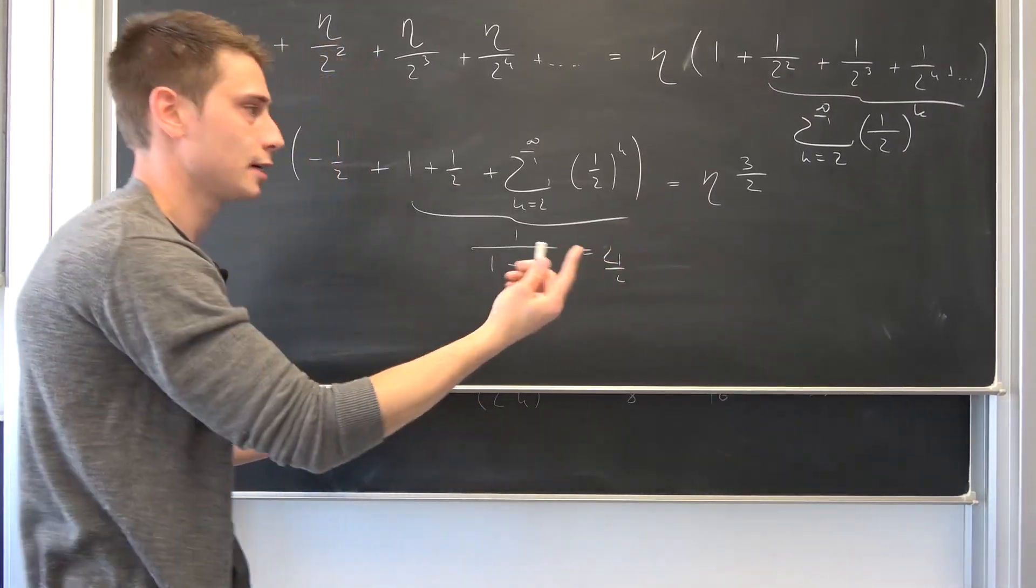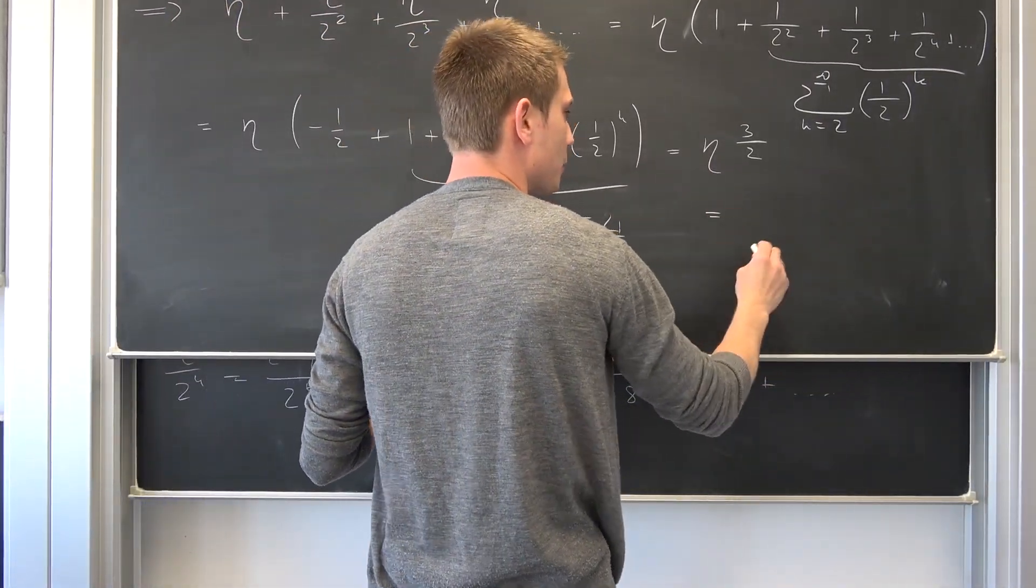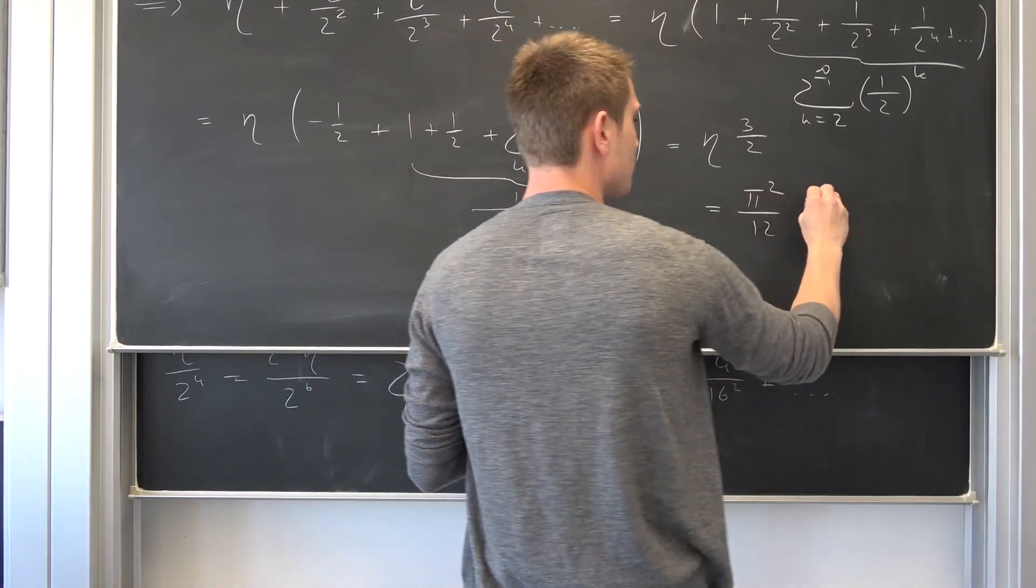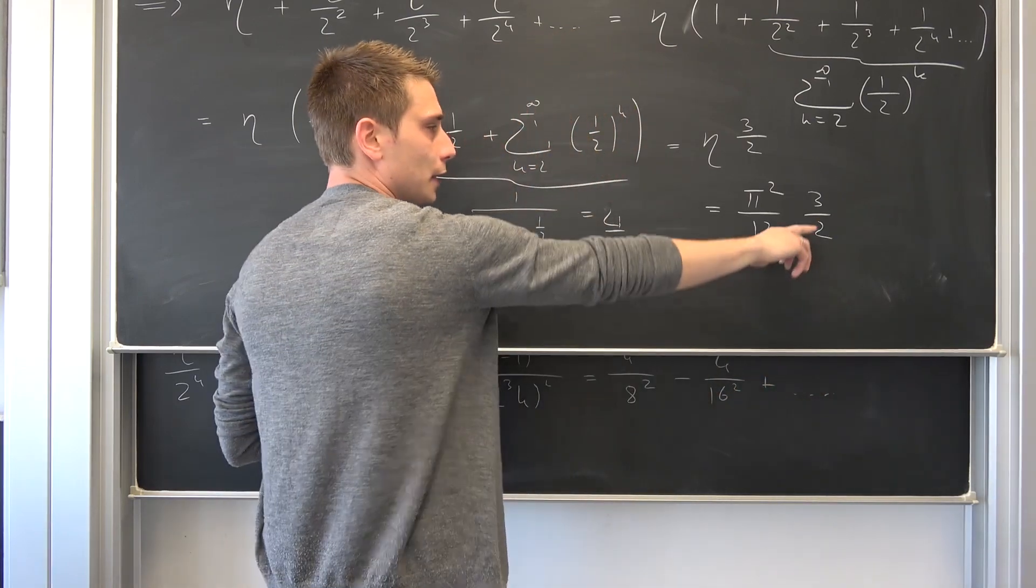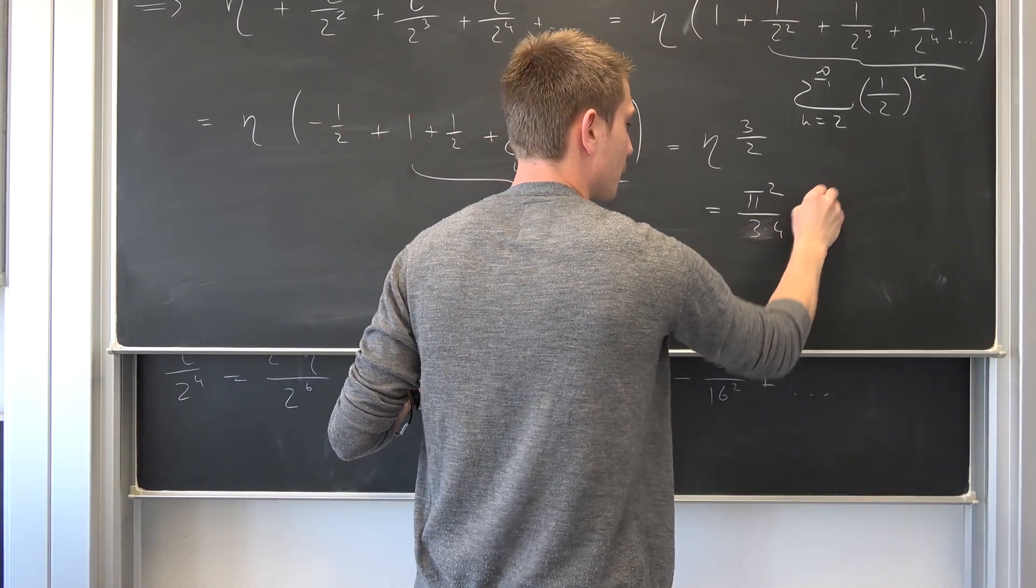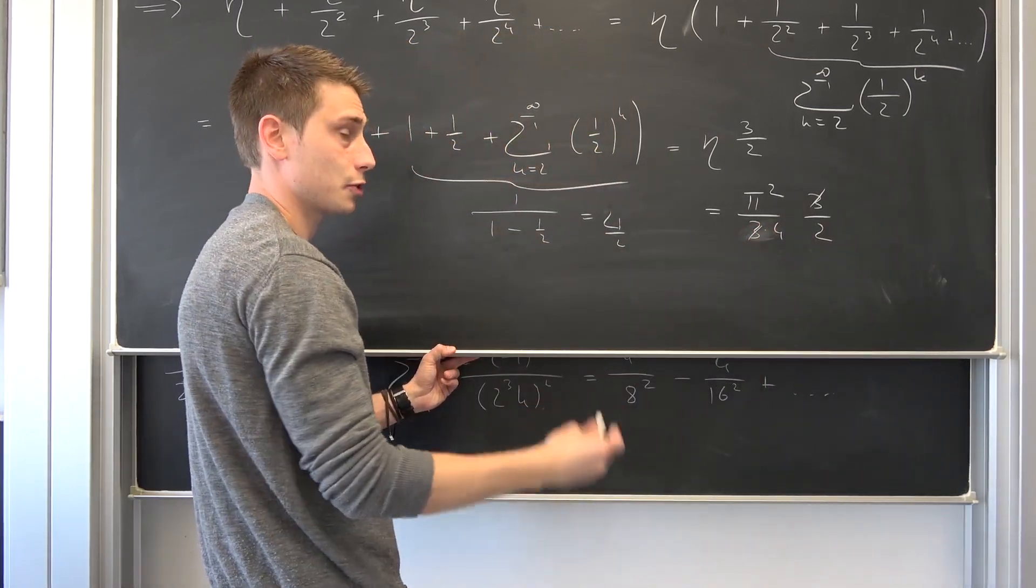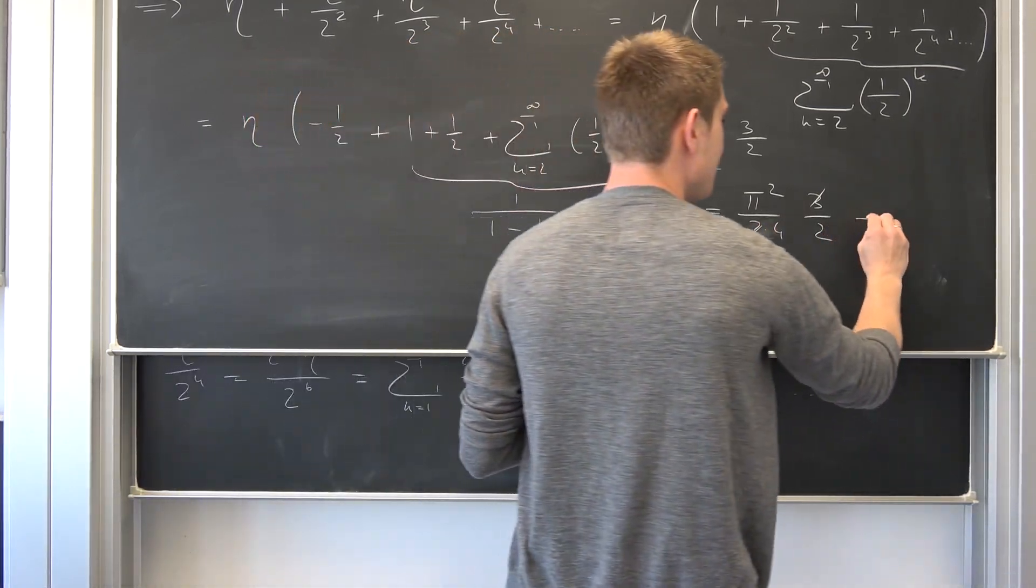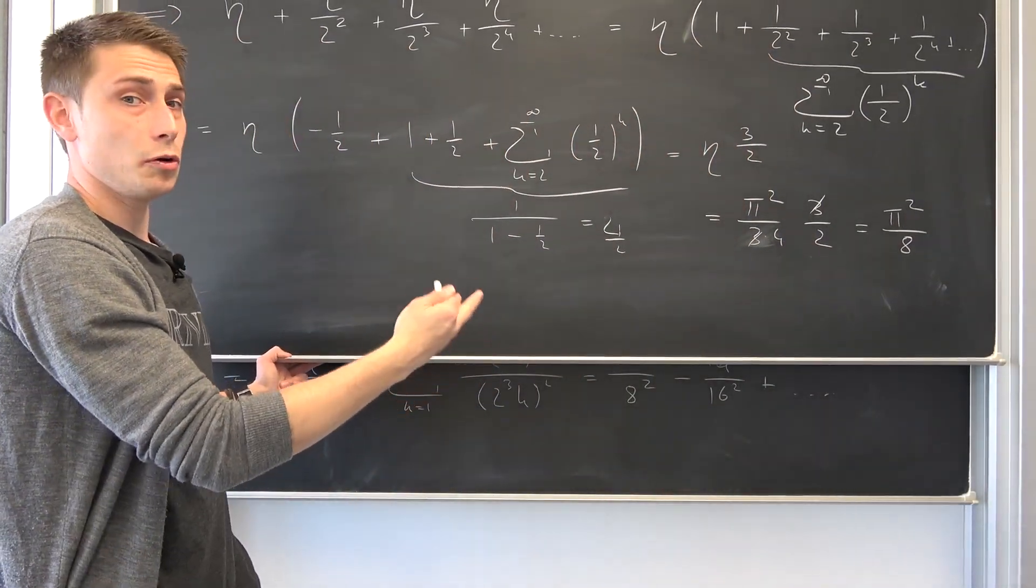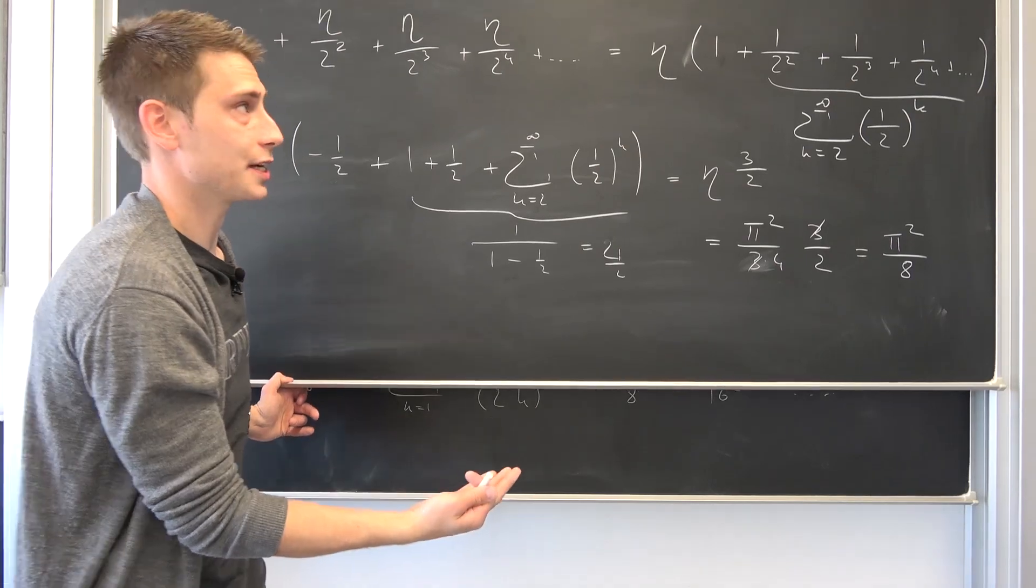This is good. We know what eta is, so we can just compute this. That's really easy. We know that this is pi squared over 12 times 3 over 2. This is going to cancel out, so 12 is nothing but 3 times 4. 2 times 4 in natural numbers is nothing but 8, so this is pi squared over 8.